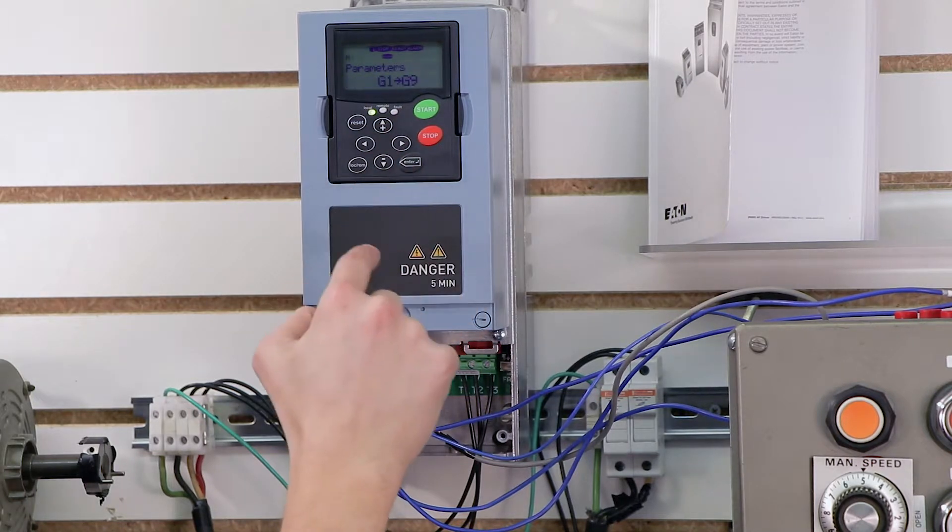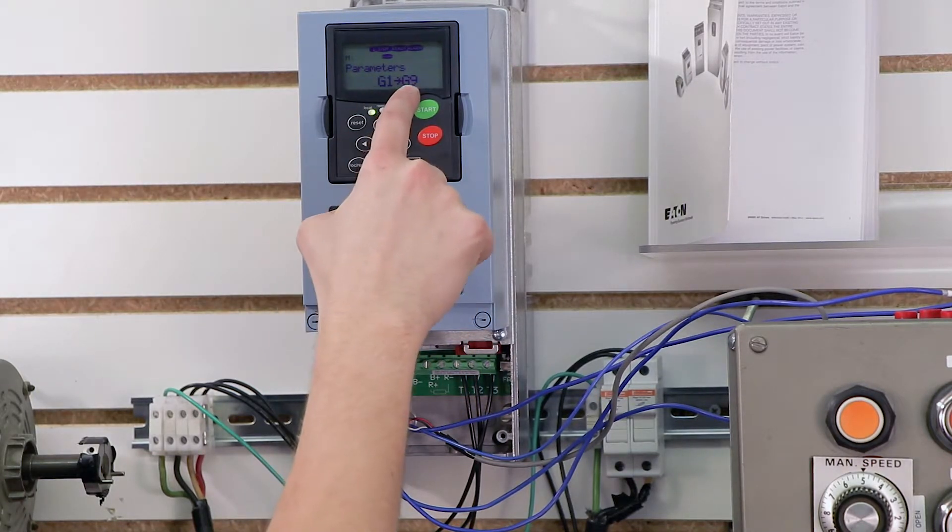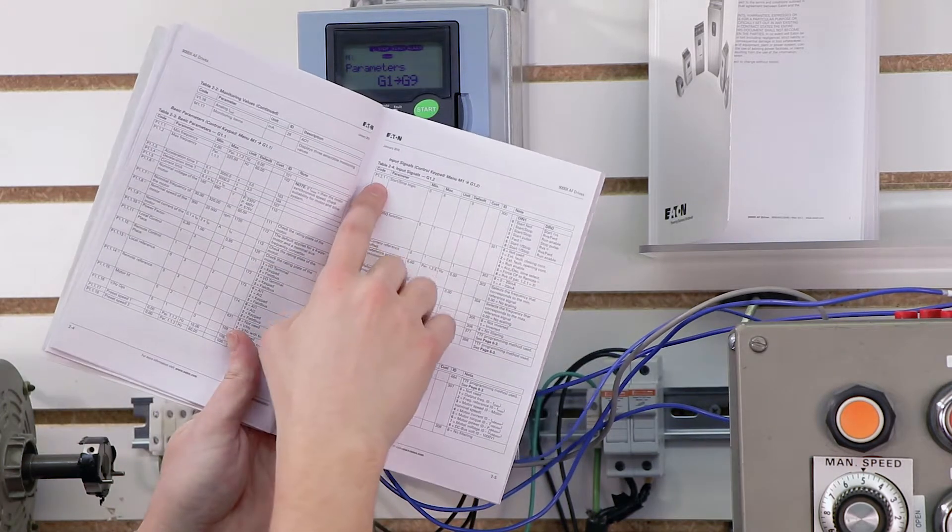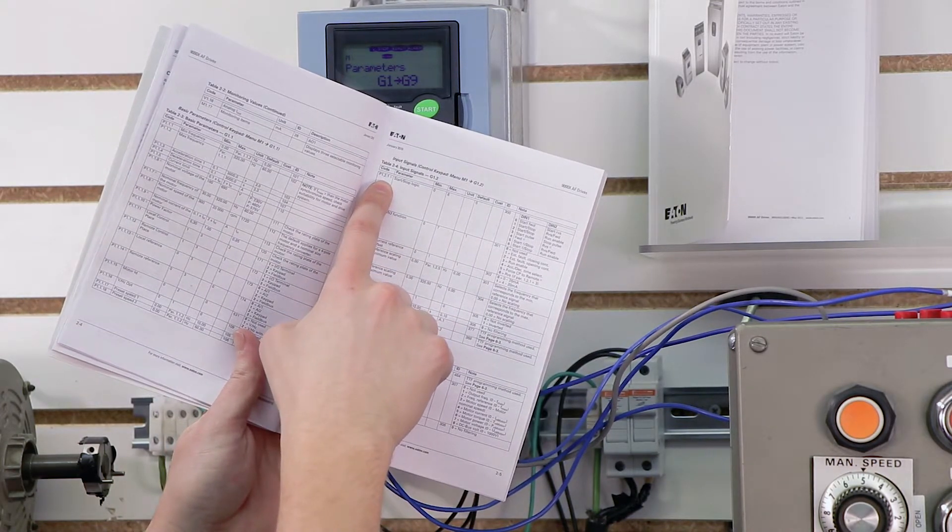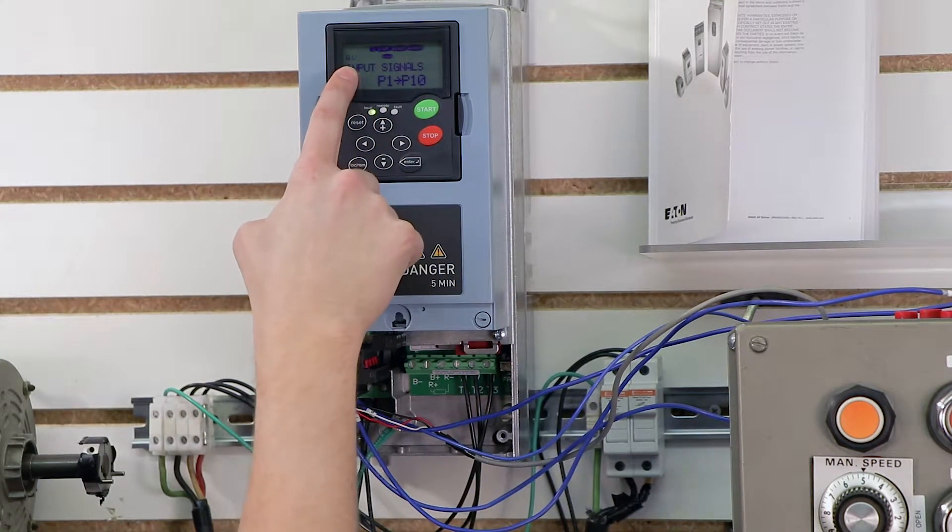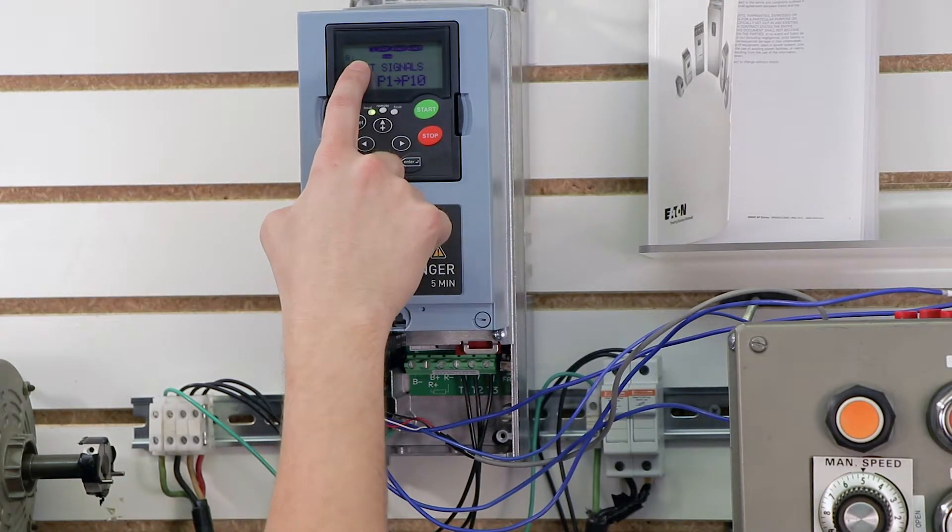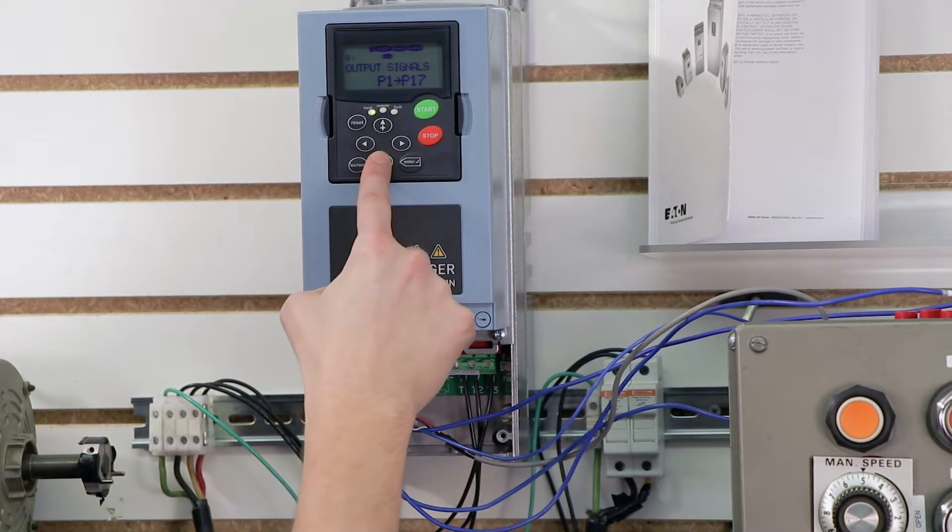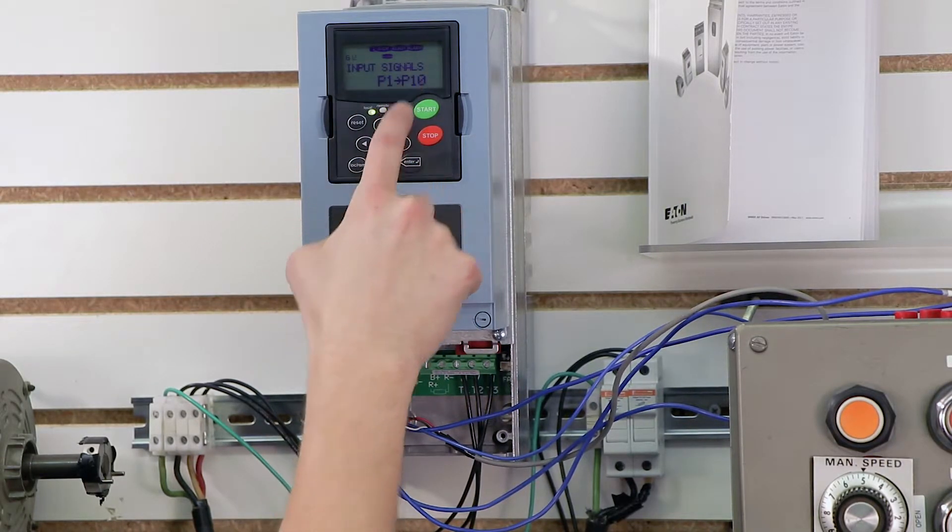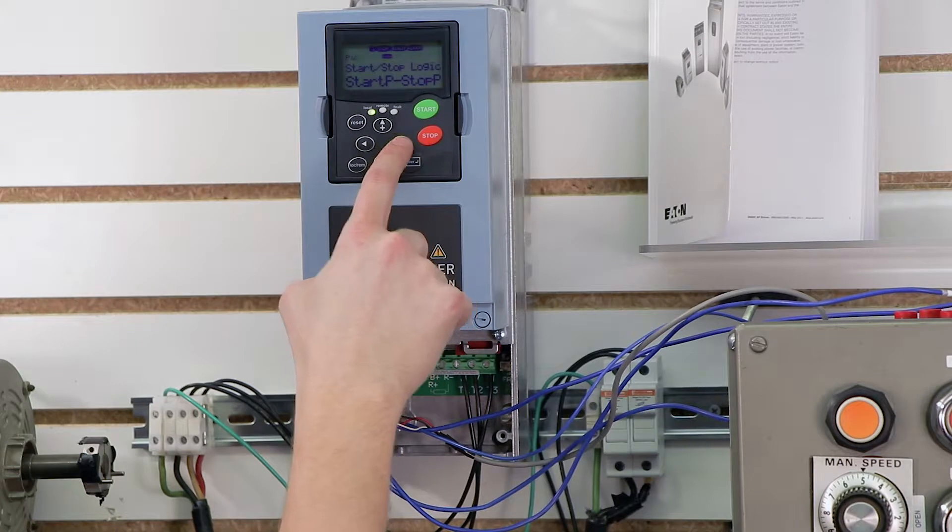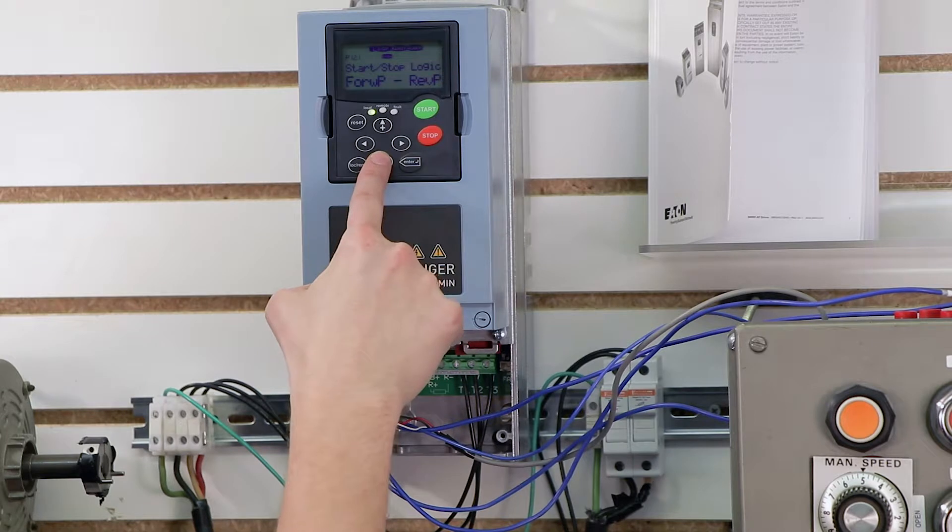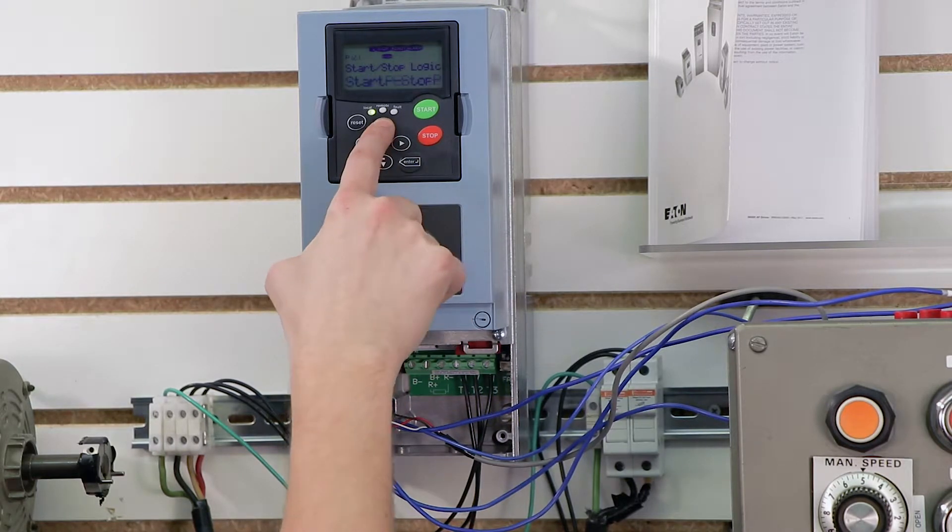So let me go back to our parameters, so I'm going to go back over to programming, press enter. Again, I said parameter g1 through g9, we're going to this particular section here. Parameter 1.2.1 is our first, so I'm going to press right, and up here in this corner, you may or may not see it in this video, but it says g1.2, and that's where we want to be. We want to go to 1.2.1 first, so it's input signals. I'm going to press right again, and here's 1.2.1. I'm going to press right again, and this is where I can actually adjust how my drive starts and stops.